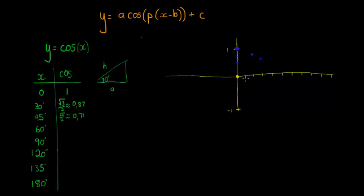And then at 60 degrees, cos of 60 degrees is a half. So then I am at 60 degrees, it's about there, I'll be at a half.